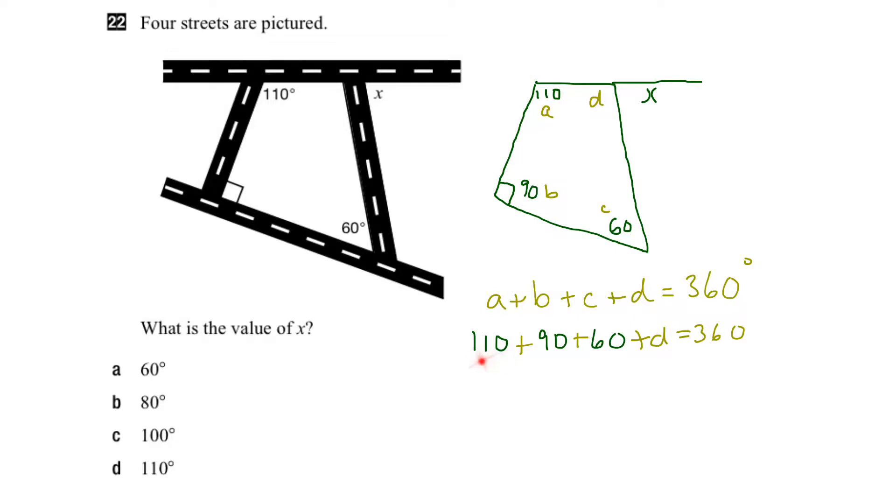So let's collect like terms. 110 plus 90 is 200, plus 60 is 260. So I'll write it all in yellow here: 260 plus D is equal to 360.